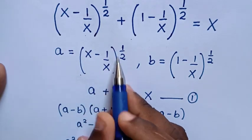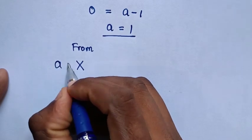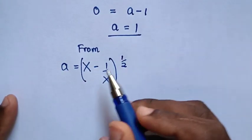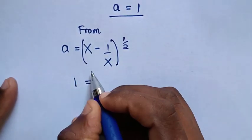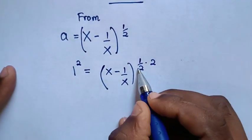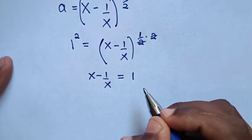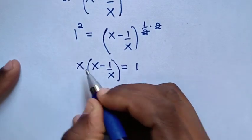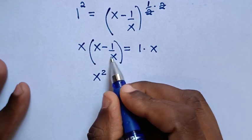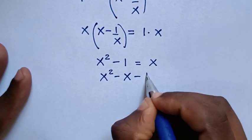Recalling that a equals (x minus 1 over x) to the power of a half, and substituting a equals 1: 1 equals (x minus 1 over x) to the power of a half. Squaring both sides gives x minus 1 over x equals 1. Multiplying through by x: x squared minus 1 equals x, so x squared minus x minus 1 equals 0.